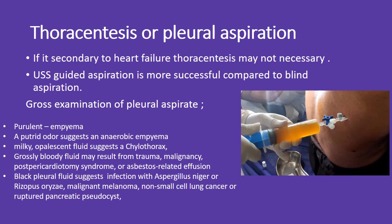When considering thoracentesis or pleural aspiration: if the effusion is secondary to heart failure, thoracentesis may not always be necessary. Ultrasound-guided aspiration is preferred over blind aspiration. Gross examination of pleural aspirate can provide valuable diagnostic clues — purulent fluid suggests empyema; a putrid odor indicates anaerobic empyema; milky opalescent fluid suggests chylothorax; grossly bloody fluid may result from trauma, malignancy, post-pericardiotomy syndrome, or asbestos-related effusion; and black pleural fluid suggests infection with Aspergillus niger, Rhizopus oryzae, malignant melanoma, non-small cell lung cancer, or ruptured pancreatic pseudocyst.